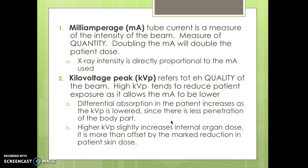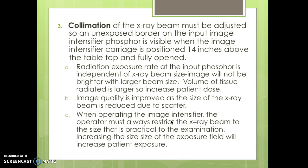With kilovolts peak (kVp), we're talking about the quality of the beam. High kVp tends to reduce patient exposure because it lowers the mA — as kVp goes up, mA goes down. Differential absorption in the patient increases as kVp is lowered since there's less penetration. Higher kVp slightly increases internal organ dose, but this is more than offset by the marked reduction in the patient's skin dose.